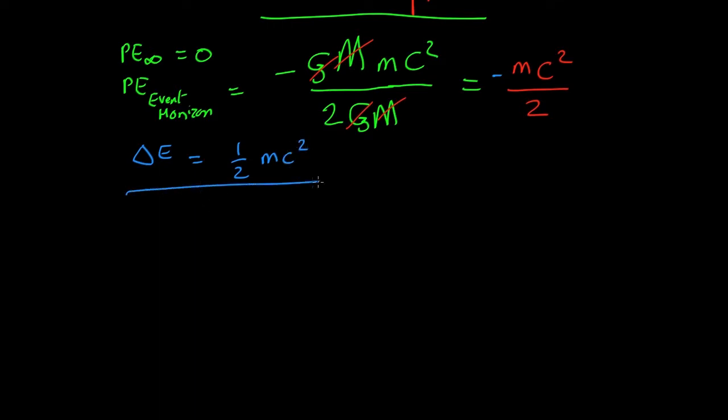So what that means is, you're releasing 50% of the rest mass energy. mc squared is the total energy, and 50% of that has been converted into potential energy by the time something hits the event horizon.